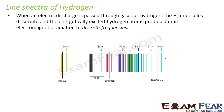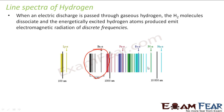Now let us study the line spectra of hydrogen — specifically the emission spectra. When electrical discharge is passed through gaseous hydrogen, the hydrogen molecules dissociate and the excited hydrogen produces radiation of discrete frequencies. If you see, only the Balmer series is visible; the others are not visible.